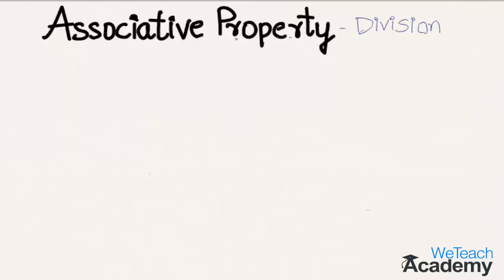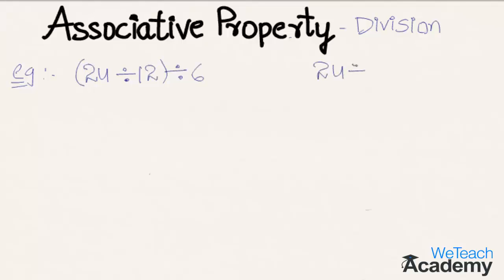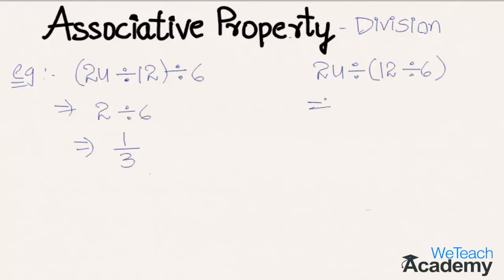Now let us discuss associative property on division with an example. Here the example is (twenty four divided by twelve) divided by six, and by changing the grouping we get twenty four divided by (twelve divided by six). On the left hand side, twenty four divided by twelve is two, and two divided by six equals one-third. On the right hand side, twelve divided by six is two, and twenty four divided by two equals twelve.